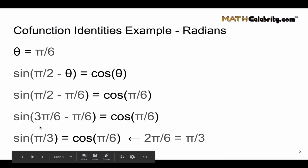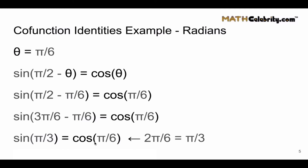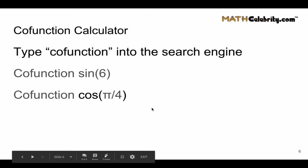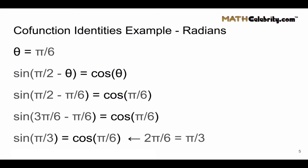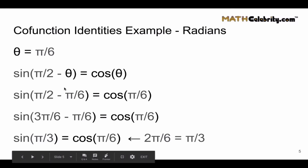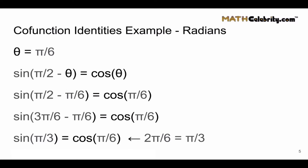Since pi represents 180 degrees, translating back to degrees it's the sine of 60 equals the cosine of 30 — which is the same result we got in our degrees example, just with the numbers flipped. So we know pi over 2 for radians is our complement, just as 90 degrees minus theta is the complement in degrees.